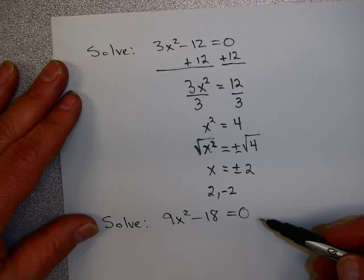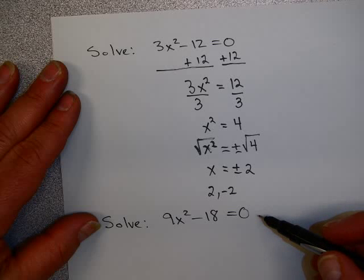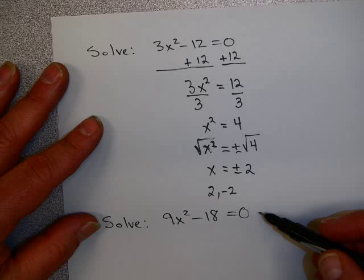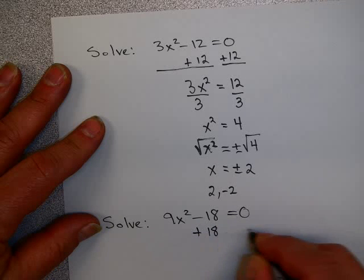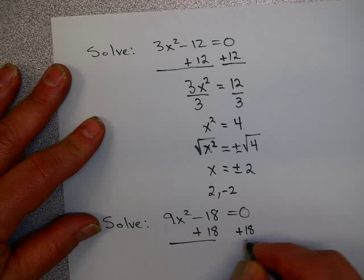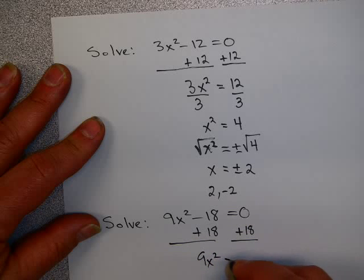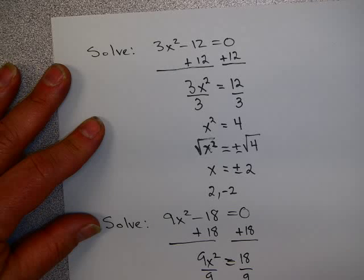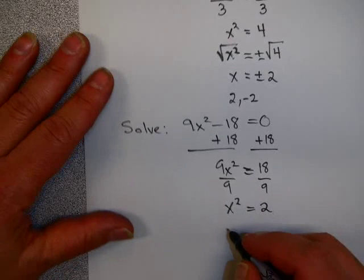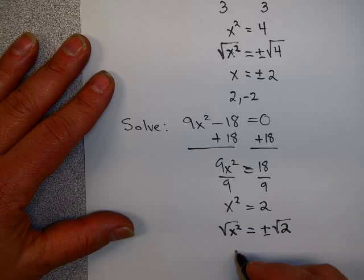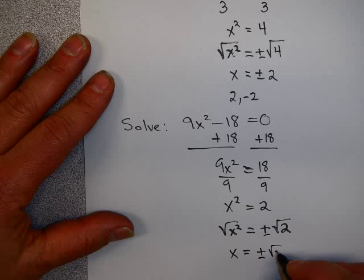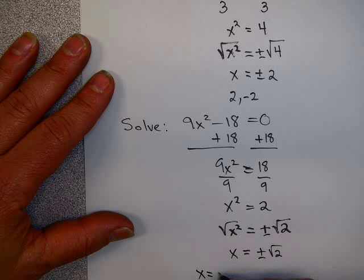See if you can solve this one by yourself. Stop the video now. And then return to it when you are completed. Okay, to solve this one, I'm going to add 18 to each side. Divide both sides by 9. That gives you x squared equals 2. Again, 2 is not a perfect square, but don't worry. Take the square root of both sides. Again, don't forget your plus or minus. So x equals plus or minus the square root of 2. x equals the square root of 2. And x equals minus the square root of 2.